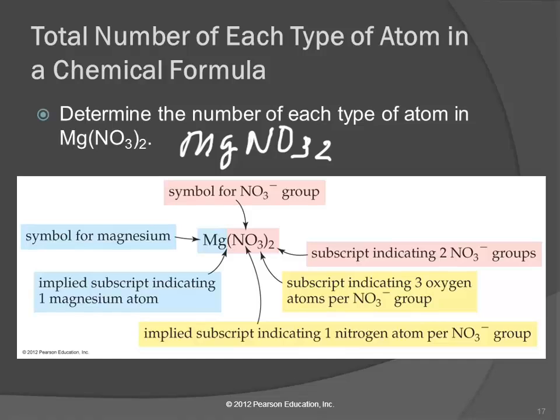So to avoid misunderstandings, we put parentheses in there. And then we can see, oh, it's two of those groups. We only use the parentheses when we have more than one. If there's just one, then we don't need the parentheses.